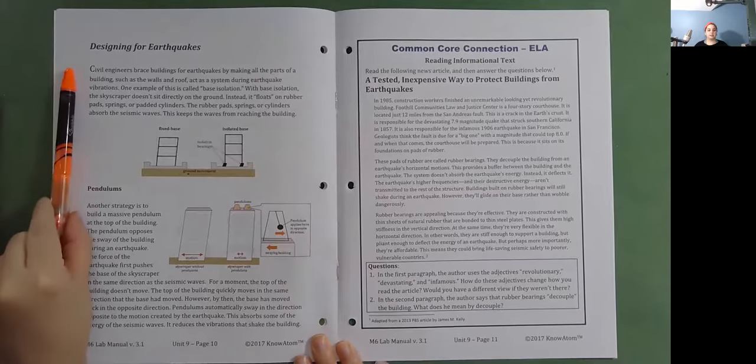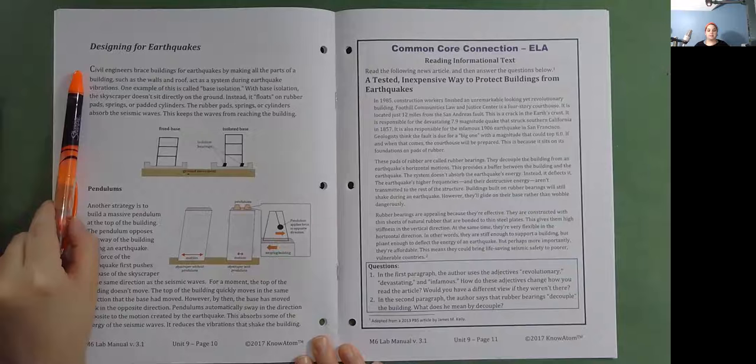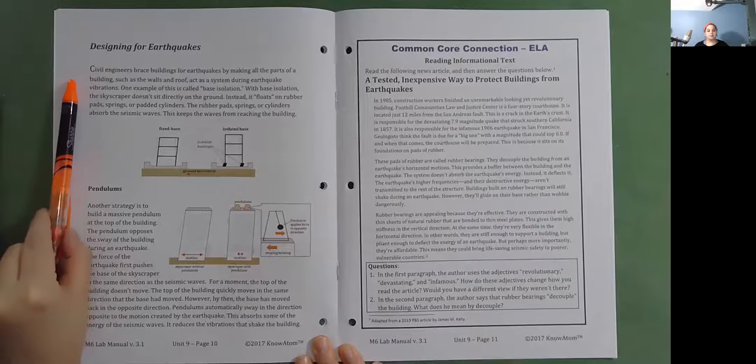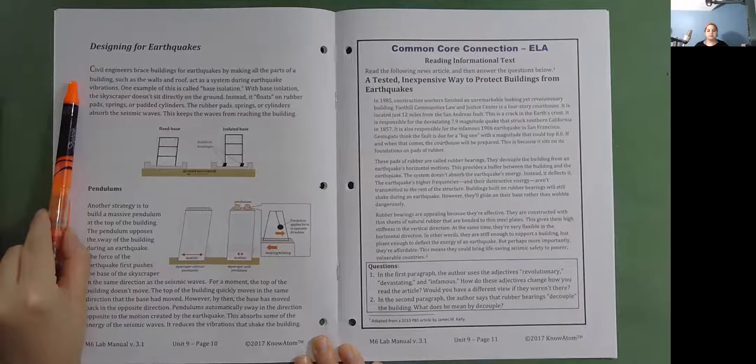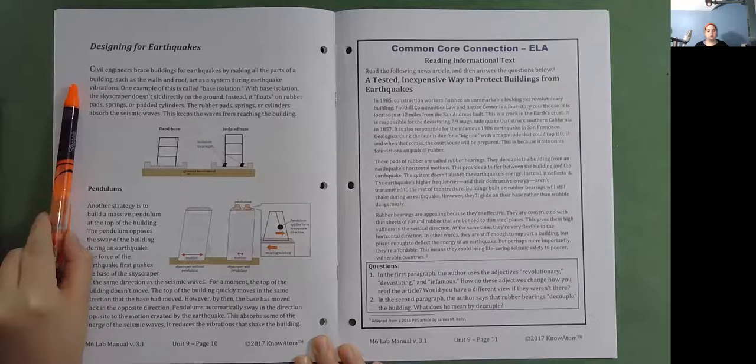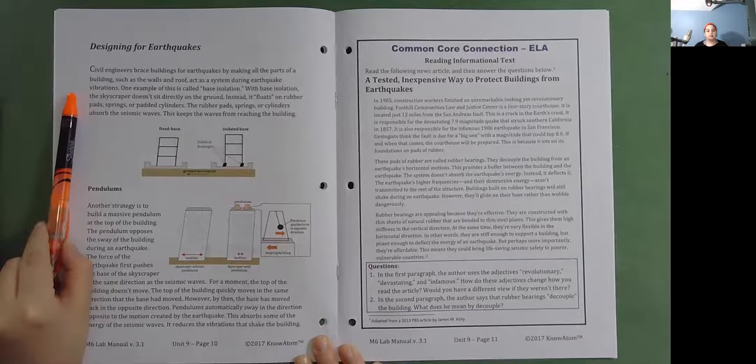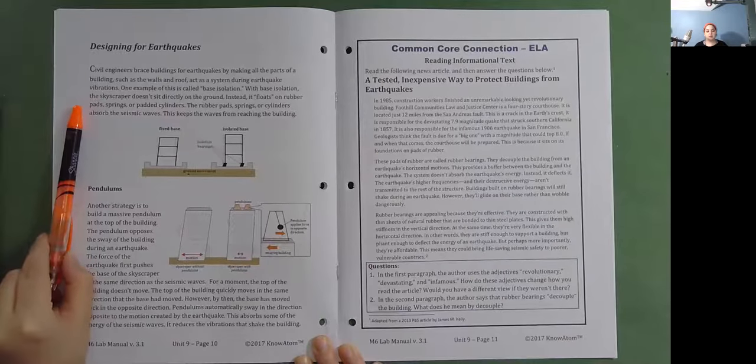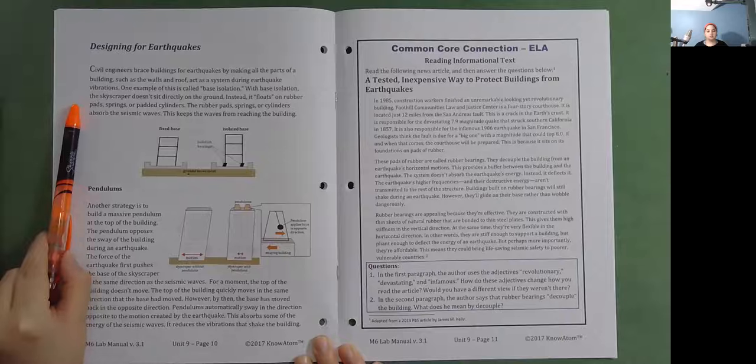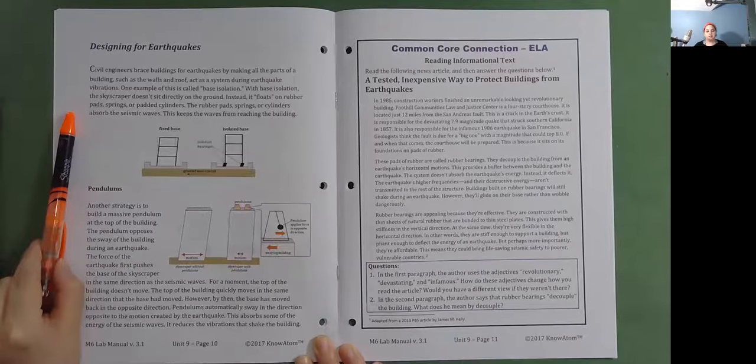Designing for earthquakes. Civil engineers brace buildings for earthquakes by making all the parts of a building, such as the walls and the roof, act as a system during earthquake vibrations. One example of this is called base isolation. With base isolation, the skyscraper doesn't sit directly on the ground. Instead, it floats on rubber pads, springs, or padded cylinders. The rubber pads, springs, or cylinders absorb the seismic waves. This keeps the waves from reaching the building.